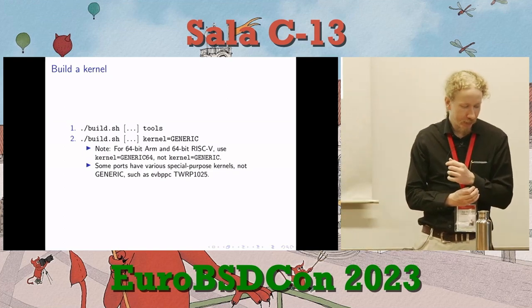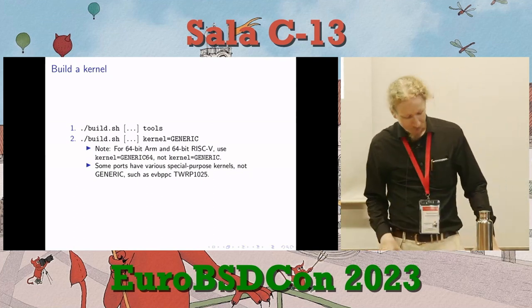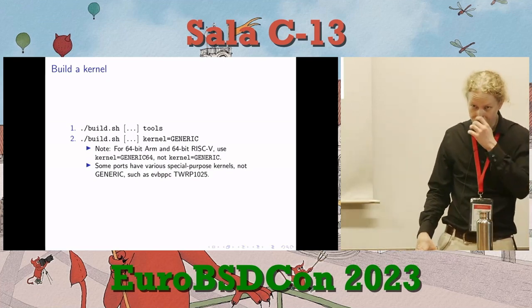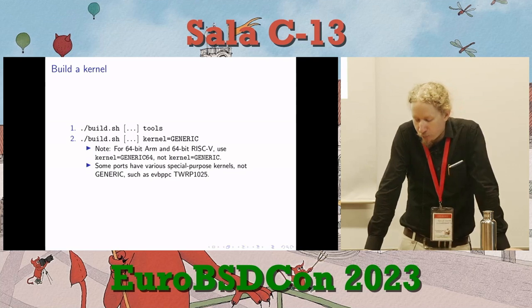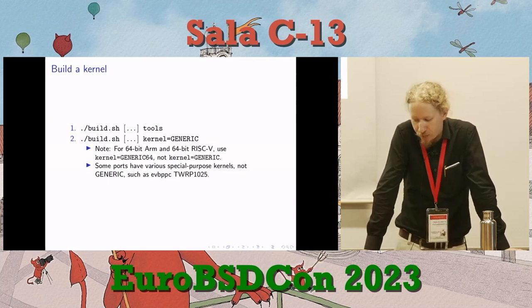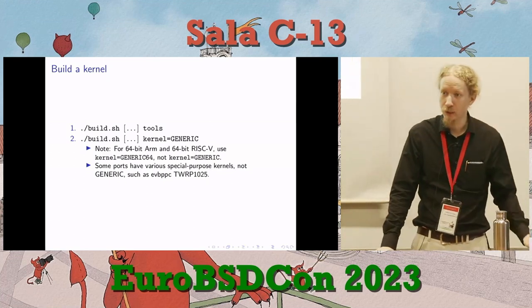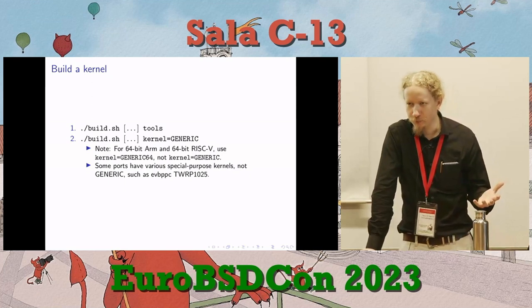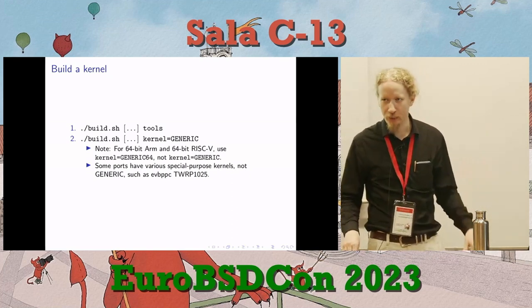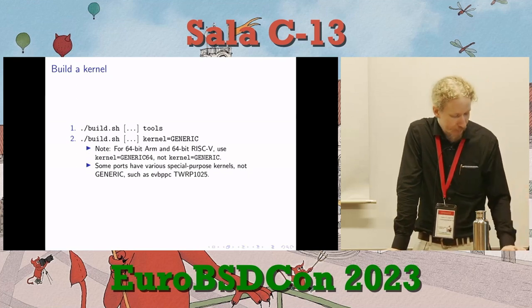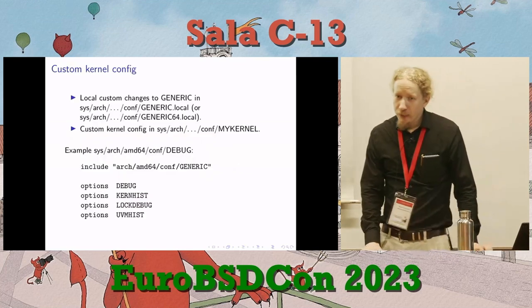For kernel development: build.sh tools to get a toolchain, then build.sh kernel=GENERIC. That works for most ports like x86, Alpha, VAX. For some — like 64-bit ARM and 64-bit RISC-V — the kernel is called GENERIC64. In some ports like EVBPPC (Evaluation Board PowerPC), these are ports designed for a generic hodgepodge of evaluation boards made by various makers for embedded systems. You might find separate kernels if you're dealing with EVBPPC, EVBARM, or similar.